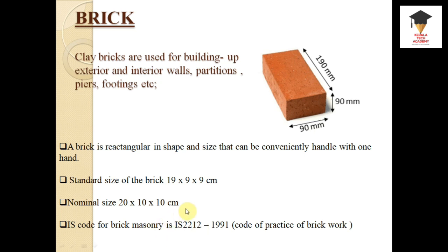The nominal size is 20x10x10 cm. The nominal size means the size including the mortar joint, whereas the standard size is the actual size of the brick. Approximately 1 cm thickness of mortar is added around a brick. The code used for brick masonry is IS-2212-1991, called the Code of Practice for Brick Masonry.